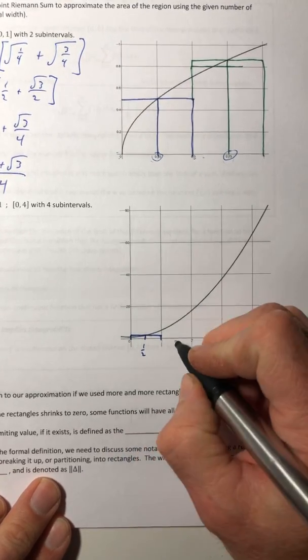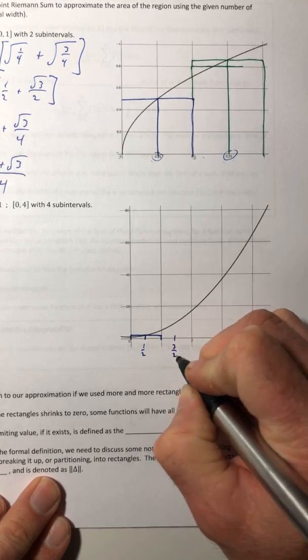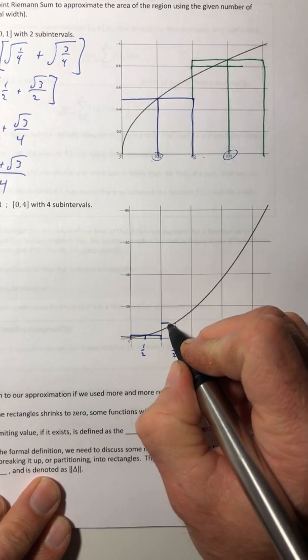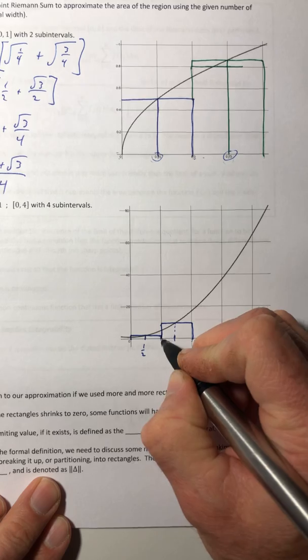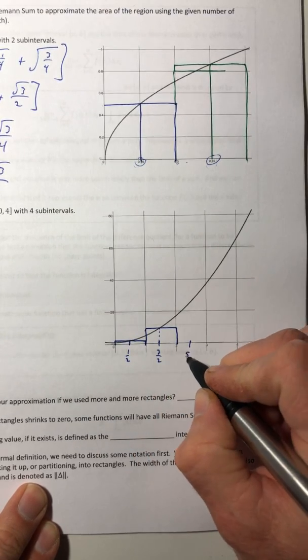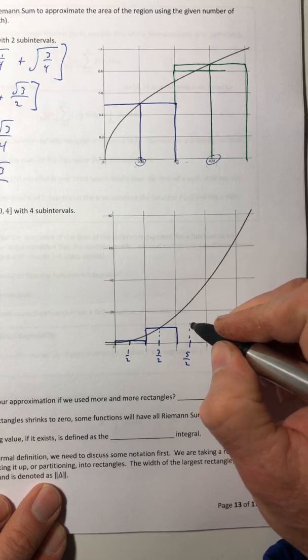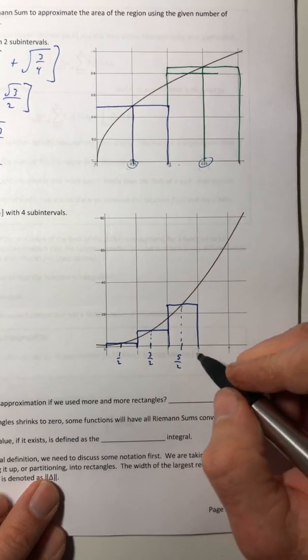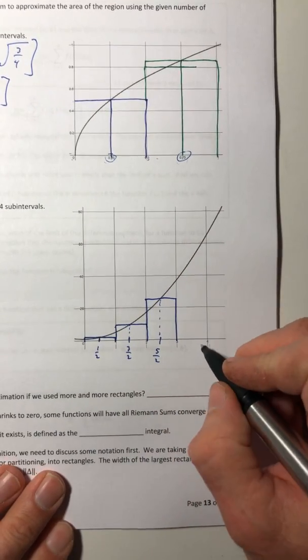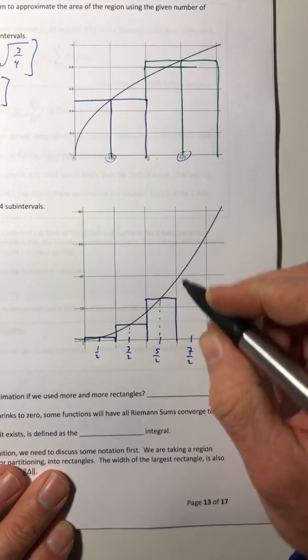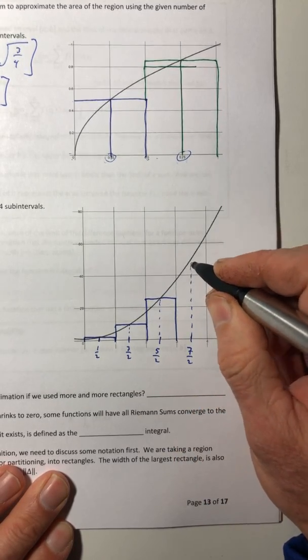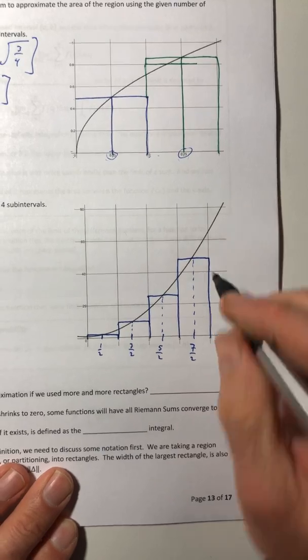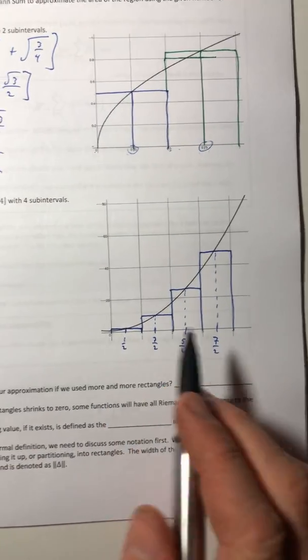And then between one and two, it's three over two. So that's going to be the height of my rectangle there. And then the next one would be five over two. And then the last one in between three and four is seven, seven over two.